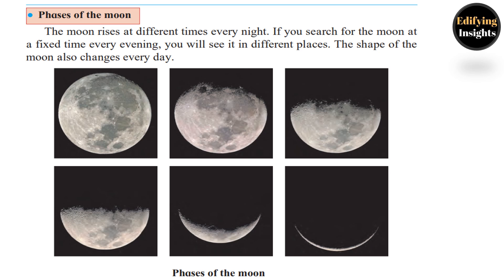Nearly after 30 days, a new moon follows another new moon. A day on which the moon appears completely round is called full moon day. A day on which the moon appears invisible is called new moon day. The shape of the moon keeps decreasing from the day of the full moon to the day of the new moon, and the shape keeps increasing from the day of the new moon to the day of the full moon.